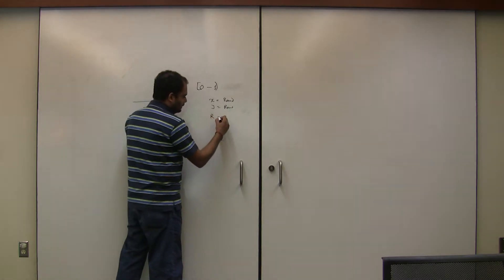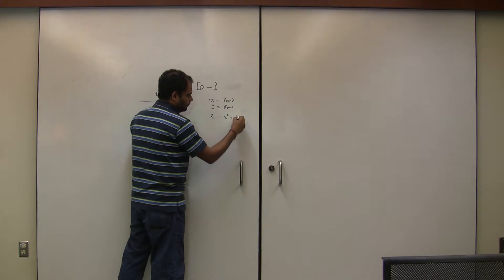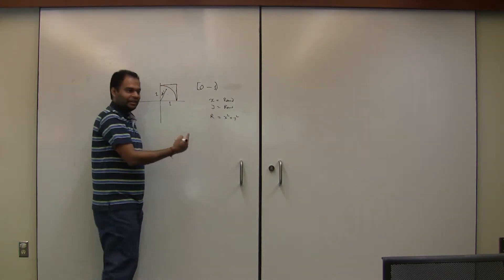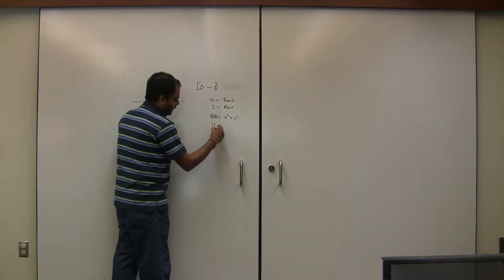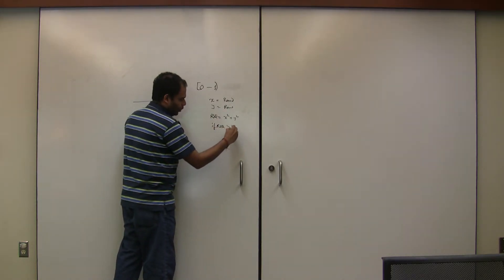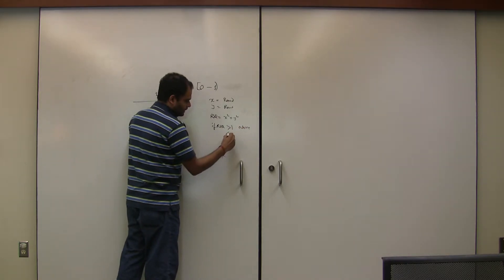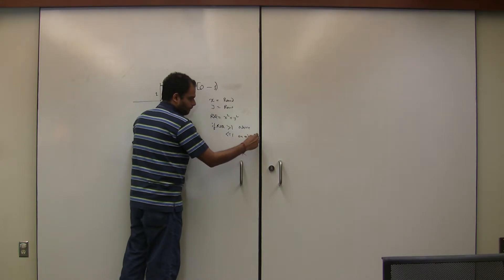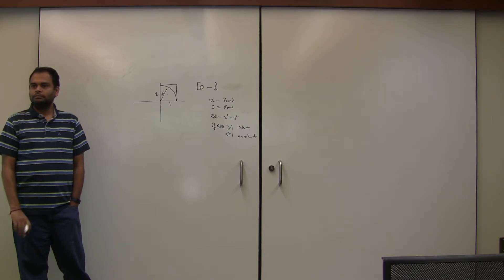If r, and how do you calculate r? You don't have to do square root, because we're doing greater than 1. So I'm just saying r as q. So if r squared is greater than 1, then it's outside. If r squared is less than or equal to 1, it's on or inside. Make sense so far?